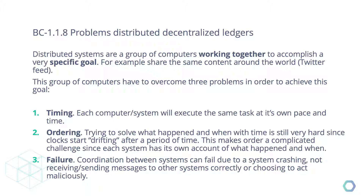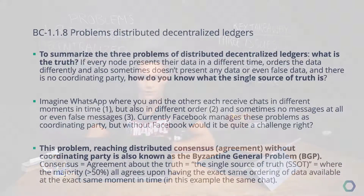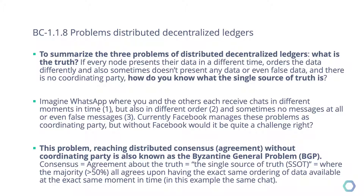The order of transactions also needs to be secure and in the same chronological order. The third problem is failure — when nodes run out, for example — which carries the same risk as loss of records in a decentralized system. Similarly, with no coordinating party, people try to manipulate the system to their advantage. So there are three key problems.